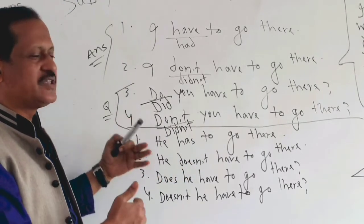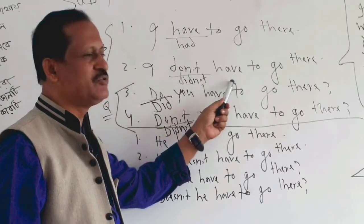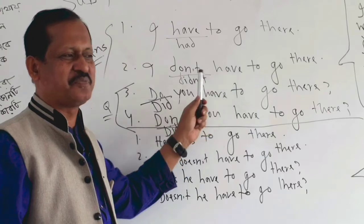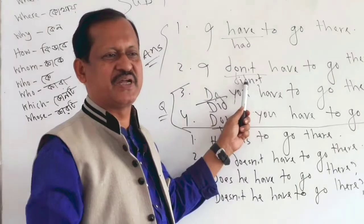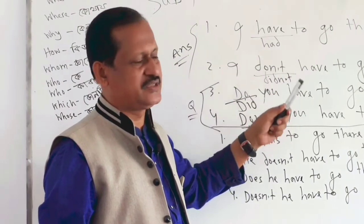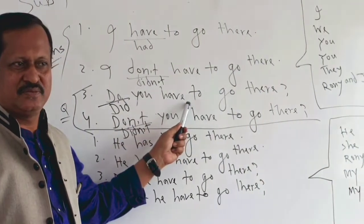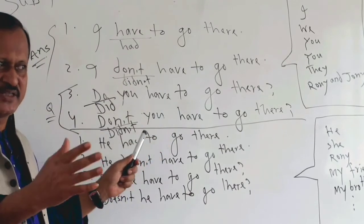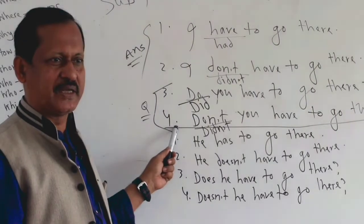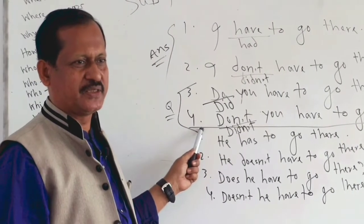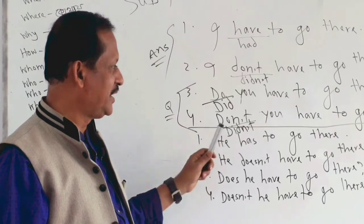Let's start from this situation. 'You should have to go there' — this is the same kind of sentence. If you have to use 'have to,' you will have to go there. If you don't have any confusion or any questions, I will clear this. I want to make sure everything is clear.